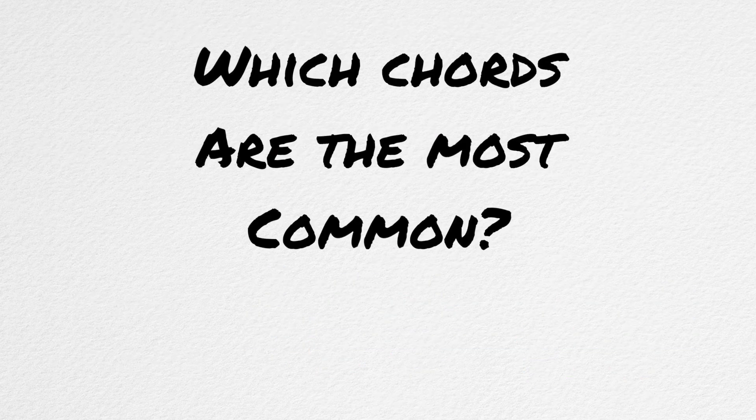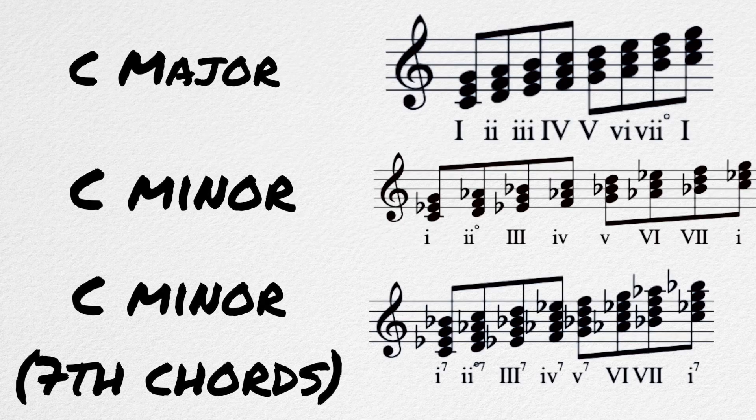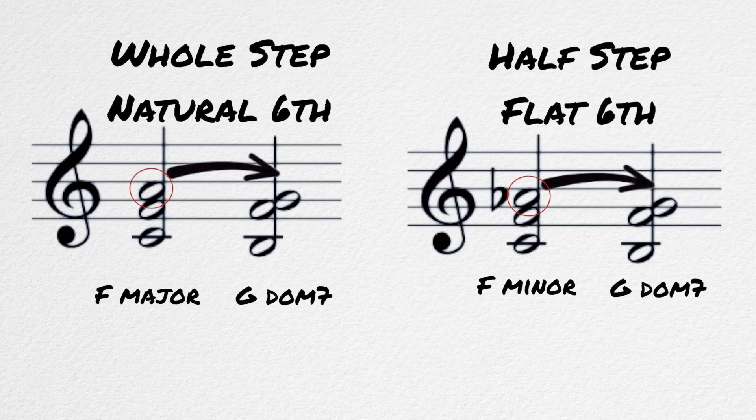Which chords are the most common to borrow? The most common form of mode mixture is borrowing from the parallel minor mode when you are in major. The chords that are most commonly borrowed are the chords that contain the flat sixth scale degree, because the flat sixth scale degree pushes us towards the dominant more effectively than the natural six that happens in major.